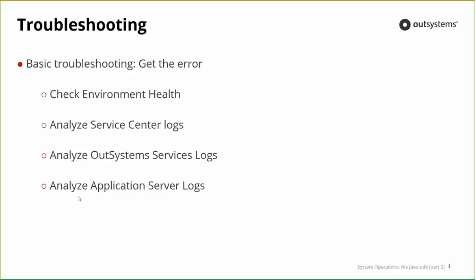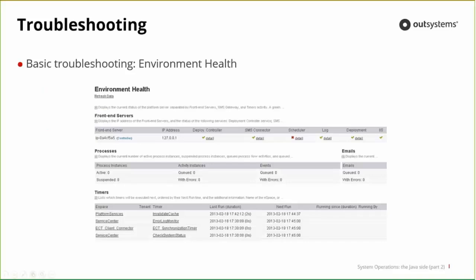Inside the logs folder you'll have a log file named for each service — Deployment Controller, Deployment, Scheduler, Log, and so on. The logs rotate every day — the current one has no date suffix; as soon as it rotates, a date suffix is added. These files also include OS traces if enabled — by default they are not enabled because they generate too much information. To configure them, go to /etc/outsystems and find a file for each service named os.[servicename].service.properties — it's an XML file where you can configure logging level in the log4j logger: fatal, error, warning, info, or debug. By default it's set to fatal or error.